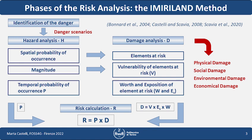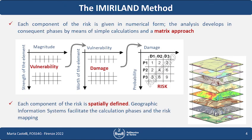This procedure was implemented by the Politecnico di Torino and other partners in the Imiriland method. The characteristics of the method are that each component of the hazard and damage analysis are kept separated from each other and given in numerical form, even simplified, so the analysis can develop in consequent phases through a metrics approach. Each component of the risk is spatially defined, so GIS is the natural environment for the implementation of this kind of methodology.